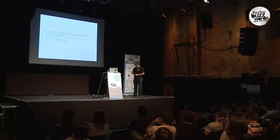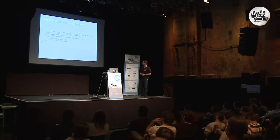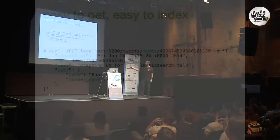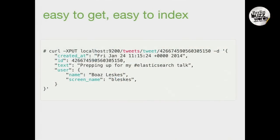For Twitter and logging, the data is easy to get, especially in JSON form, and easy to index into Elasticsearch — you just send it over. The index and type indicate the structure of the data. You give it an optional ID and send the document. Elasticsearch scans it, figures out that this is a date, this is a number, this is free text, and some nested structure. Everything is indexed by default.